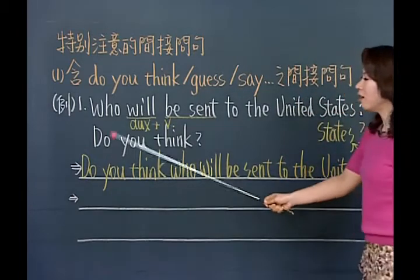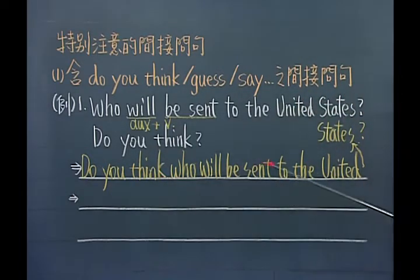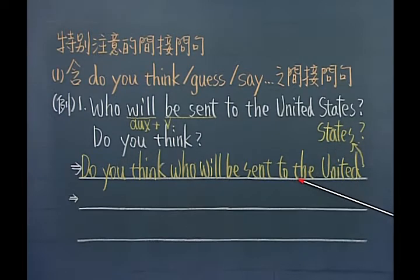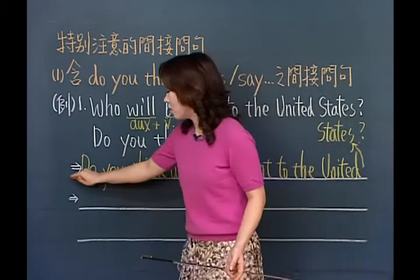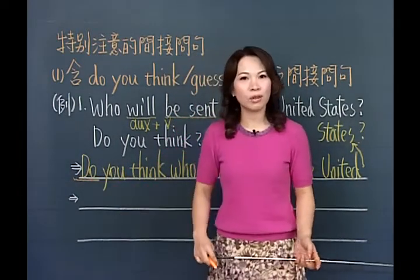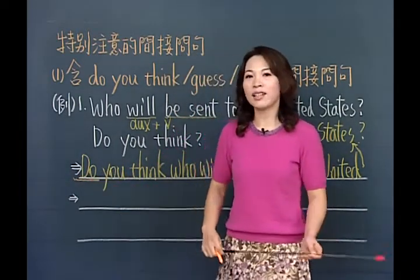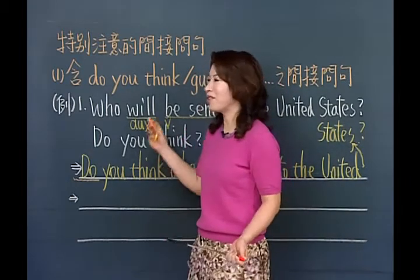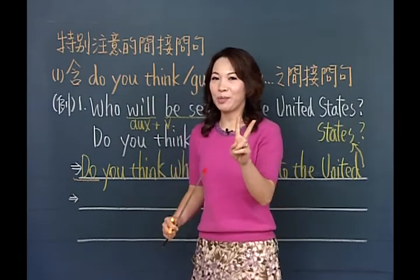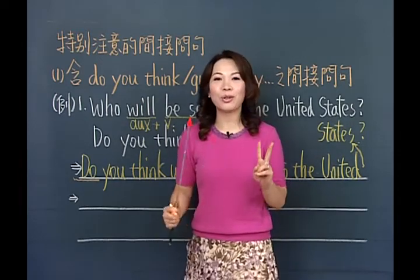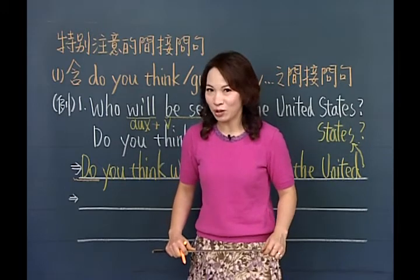好，如果按照基本合并法变成Do you think who will be sent to the United States，这句话能不能回答是汤姆？不行！因为这个问句是do助动词开头，同学想一想：在英文里面的问句有两种，一种是B动词或助动词开头的叫做Yes/No问句，一种是wh开头的叫做wh问句。